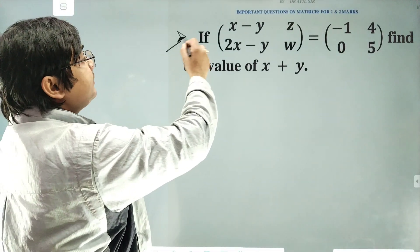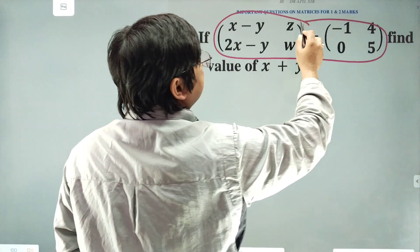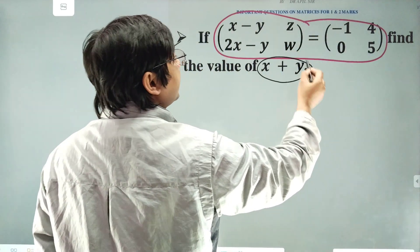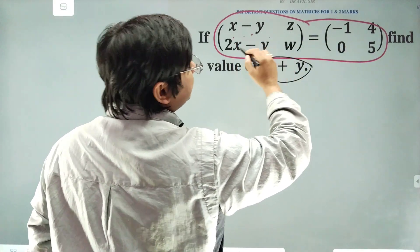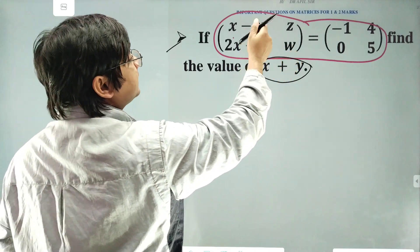Here you see another important question. If this matrix is equal to this matrix, then find the value of x and y. Since these two are equal, then their corresponding elements also will be equal.